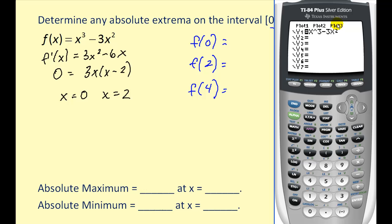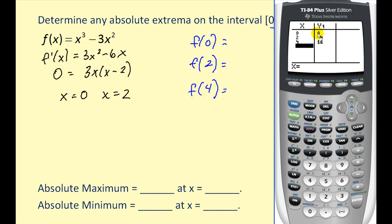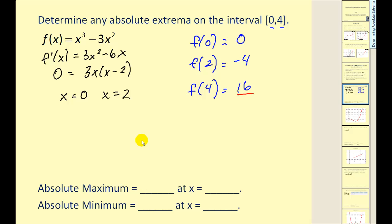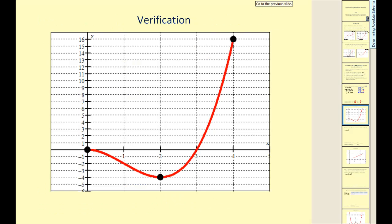We've already typed the function into y one. My table feature is set on ask, so if I hit second graph, I can just type in zero, two, and four. The corresponding y values would be zero, negative four, and sixteen. So the largest value is our absolute max at x equals four, and the smallest value is our absolute minimum at x equals two. The largest value is our max and the smallest value is our min. Let's go ahead and verify it with a graph — here's our absolute minimum at x equals two, and our absolute max of sixteen at x equals four.